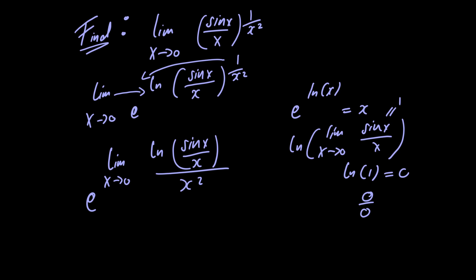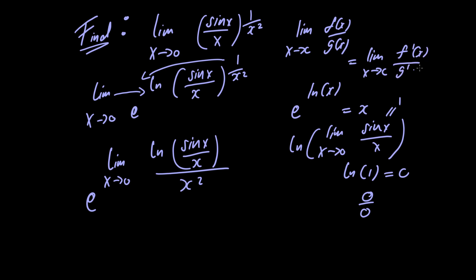In order to evaluate a limit of this form, we can use something called L'Hôpital's rule. L'Hôpital's rule basically says that if you have a limit as x approaches some value c of a function f of x divided by another function g of x, then that limit is equal to the limit as x approaches c of the derivative of f of x divided by the derivative of g of x, given that f and g are both differentiable at c and that they're of indeterminate form 0 over 0, or plus or minus infinity over plus or minus infinity. We can apply this rule indefinitely as long as the criteria I've just mentioned is satisfied.